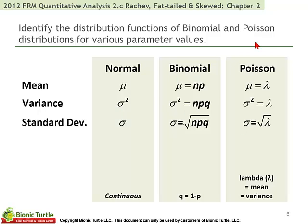In the case of the binomial, we have the mean, which is n times the probability of success. And because the binomial is a series of Bernoullis, q is 1 minus p. So if p is 20%, then q is 80%. The mean of the binomial is just n times p, and the variance is n times p times q, such that the standard deviation is the square root of that. The Poisson has an elegant feature in that lambda, the only parameter we specify, is both the mean and the variance. That means the standard deviation of the Poisson is the square root of lambda.